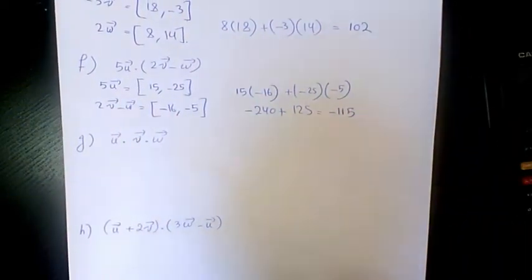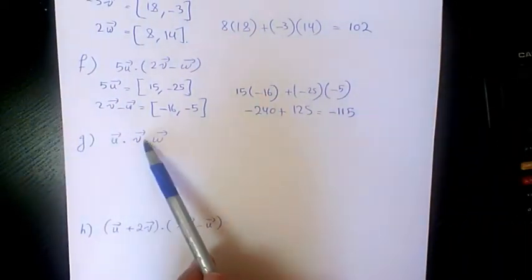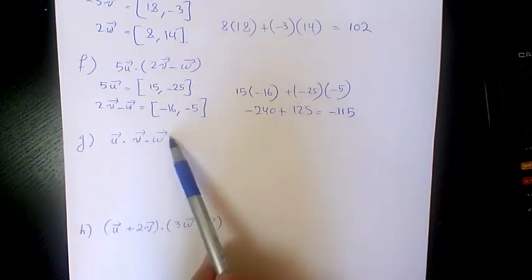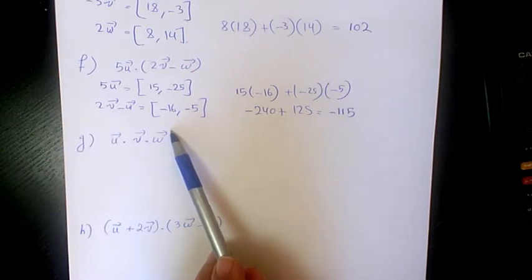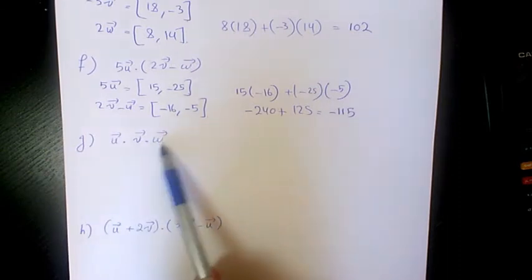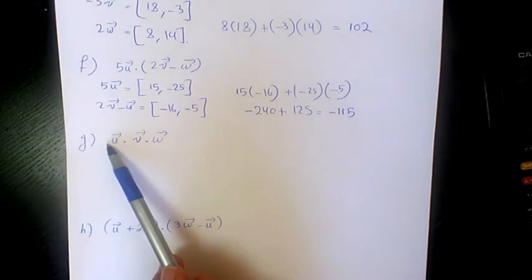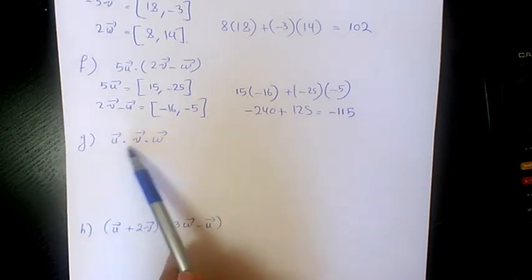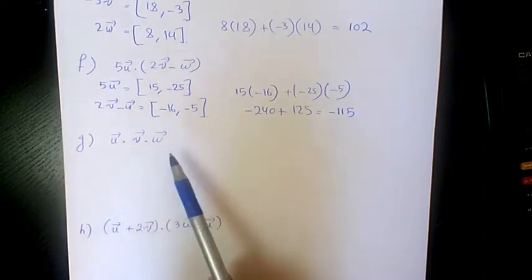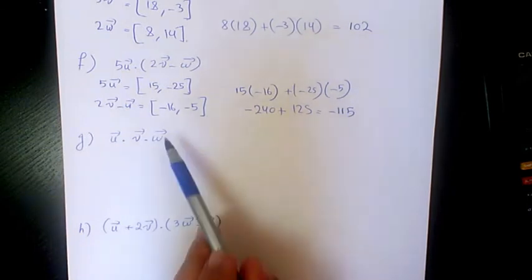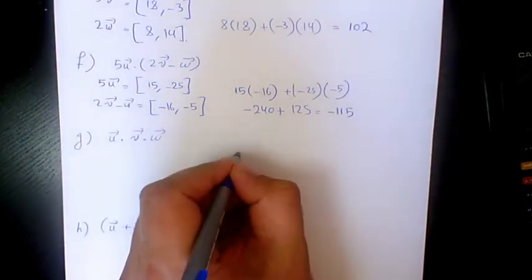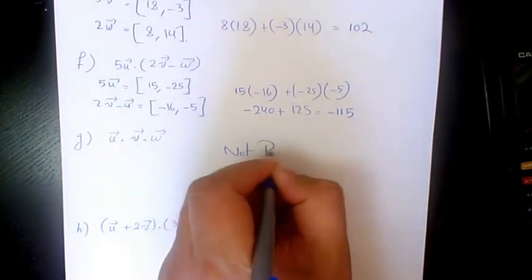Next, u dot v dot w. The dot product of v and w gives a scalar. We cannot then take the dot product of a scalar with the remaining vector, and this doesn't correspond to any valid property. So this is not possible.